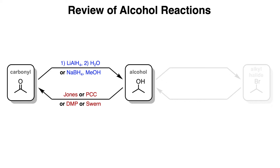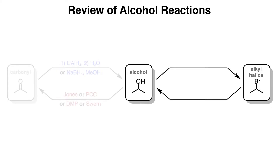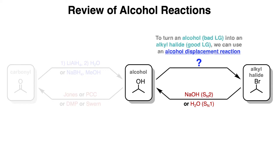Now, if we look at the other half of this, to go from an alkyl halide to an alcohol, you can use NaOH to undergo an SN2 reaction, or even use water to undergo an SN1 reaction. But what about going in the reverse? To turn an alcohol, which is a bad leaving group, into an alkyl halide, which is a good leaving group, we can use an alcohol displacement reaction.